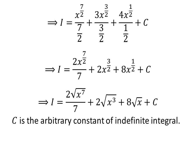We can rewrite the above expression as I is equal to 2 times square root of x raised to the power of 7, upon 7, plus 2 times square root of x raised to the power of 3, plus 8 times square root of x, plus capital C.